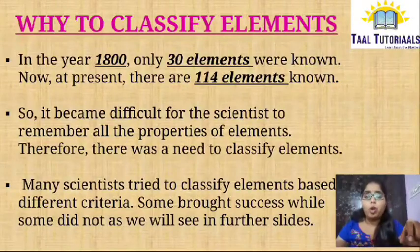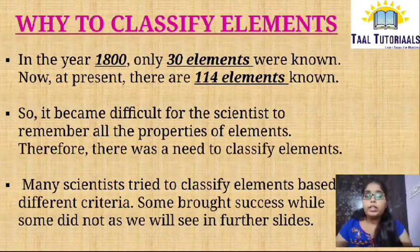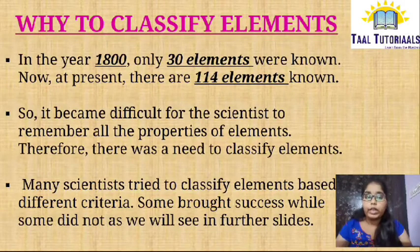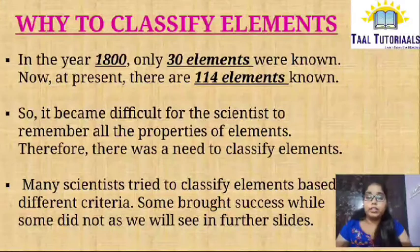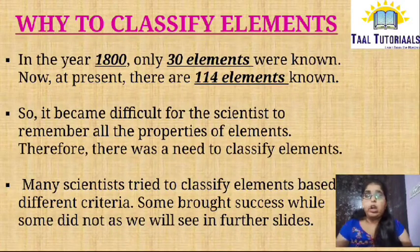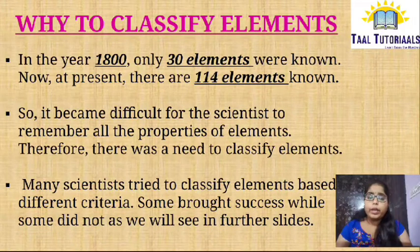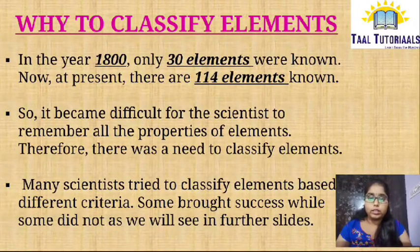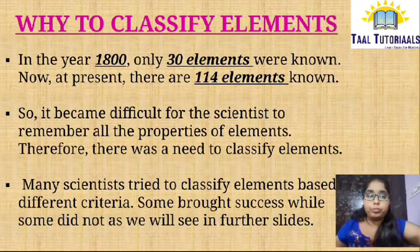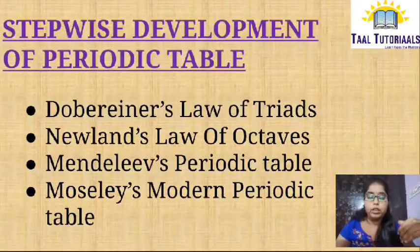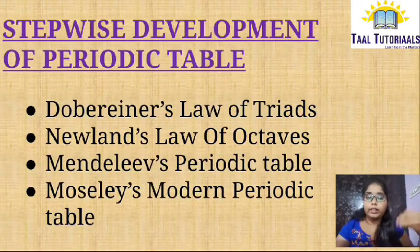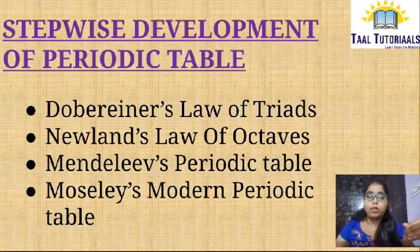Why classify elements, and what was the need for classification? In the year 1800, only 30 elements were known, but now at present 114 elements are known, and so it became a difficult task for scientists to remember all the properties of the elements. Therefore, there was a need for classification. Many scientists tried to classify elements on different criteria but only few succeeded. The stepwise development of the Periodic Table goes: first Dobereiner's Law of Triads, then Newlands' Law of Octaves, then Mendeleev's Periodic Table, and then Moseley's Modern Periodic Table.